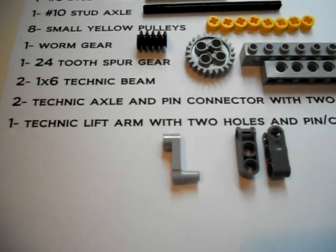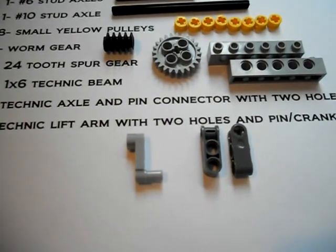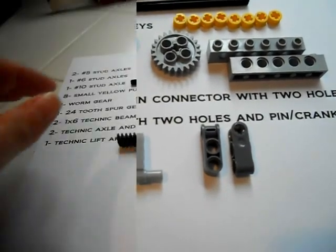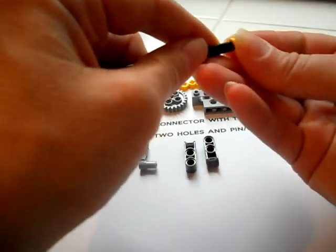and the final piece is a Technic lift arm with two holes and a pin crank. Let's start building. Let's take our No. 10 axle and put one of the yellow pulleys at the end.